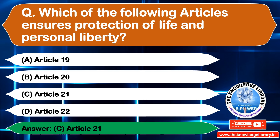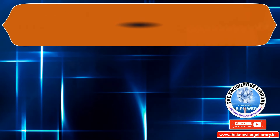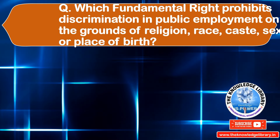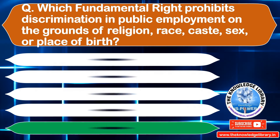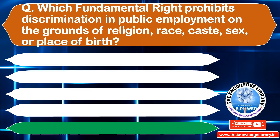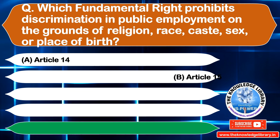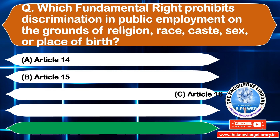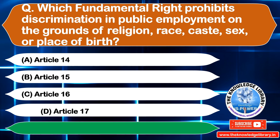The next question is: which fundamental right prohibits discrimination in public employment on the grounds of religion, race, caste, sex or place of birth? Option A: Article 14, Option B: Article 15, Option C: Article 16, Option D: Article 17. The correct answer is Option C: Article 16.